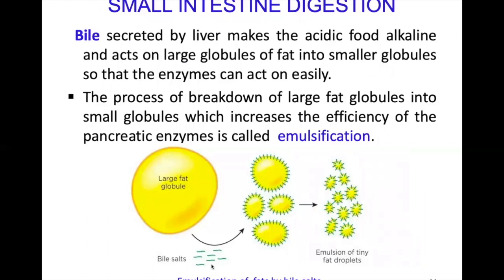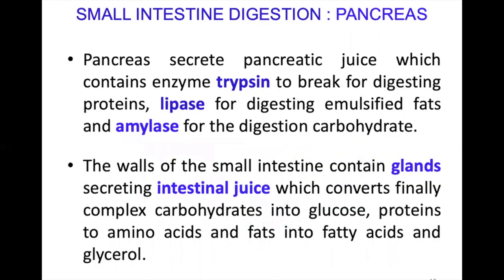The breakdown of large fat globules into smaller ones increases their surface area, improving enzyme efficiency — this process is called emulsification. As bile acts on large fat globules and they become progressively smaller, the total surface area increases significantly. The pancreas secretes pancreatic juice containing enzymes: trypsin, which breaks down proteins; lipase, which breaks down fats; and amylase, which breaks down carbohydrates.